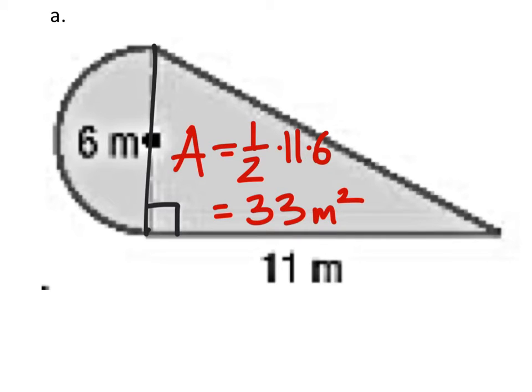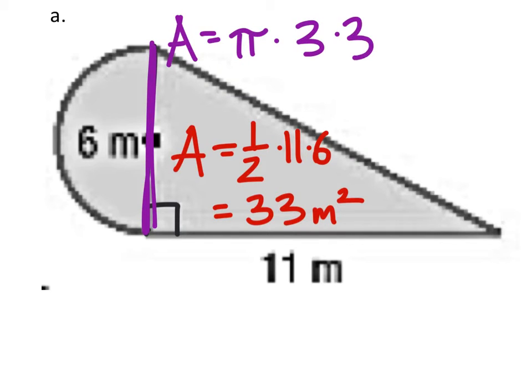And then we have this semicircle, and the area of a circle is pi times the radius times the radius. 6 is the diameter, so half of that is 3. So we have 3 times 3.